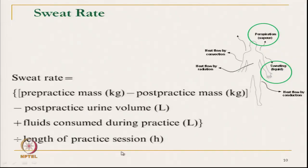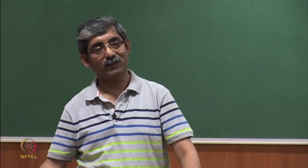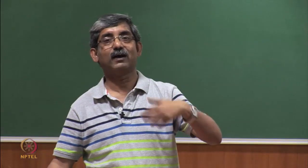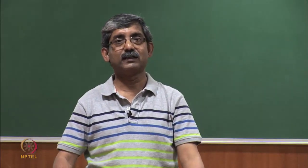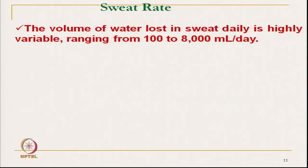Total effective sweat released divided by time gives the total sweating rate. At different activity levels, the sweating rate will be different — if our activity is high, the sweating rate will be high. It can go from 100 millilitres to 8000 millilitres per day, depending on activity. If we are sitting idle or totally at rest, our sweating rate will be very low. If we are active, the sweating rate will be very high.